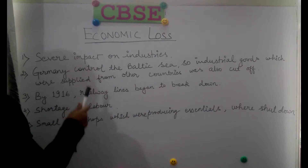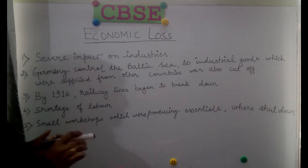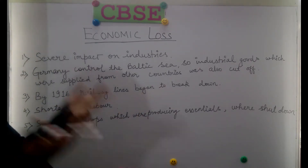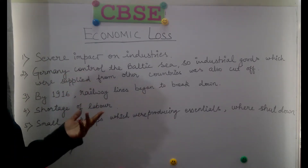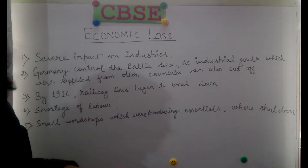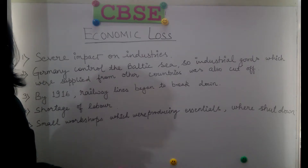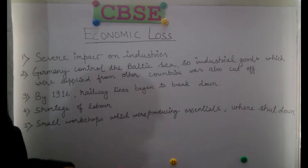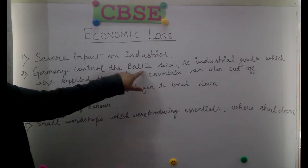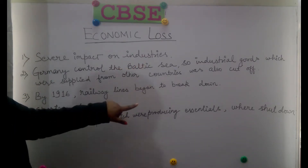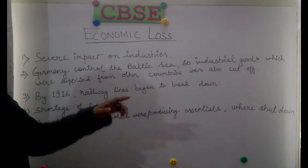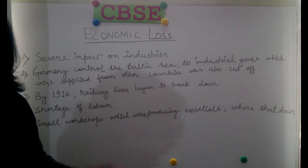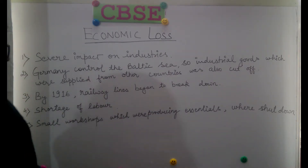In 1916, railway lines began to break down. With the Baltic Sea route banned and railway lines collapsing, the supply and consumption of goods was severely disrupted, further weakening Russia's industrial capacity.